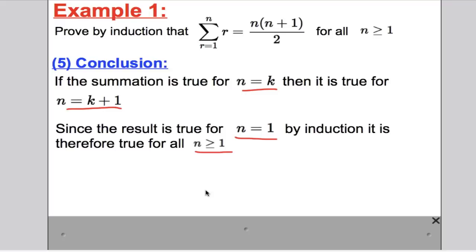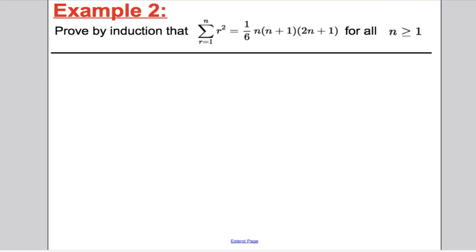First time around, that might be a difficult concept to get your head around, so we're going to do a few examples. Make sure you're writing out your working absolutely fully. Let's have a go at a slightly more complicated one: prove by induction that the sum of r² equals (1/6)n(n+1)(2n+1) for all n ≥ 1.